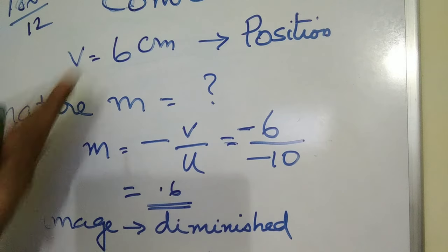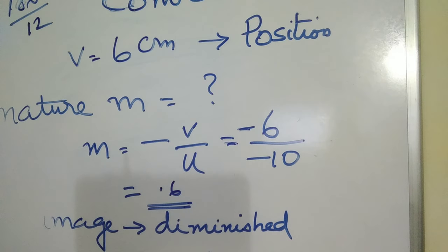This is how we can solve the problem. It is very easy for you. First of all, understand always u is negative. And for convex cases, for mirror as well as for lens, f is positive. In the case of concave mirrors as well as lens, f is negative.